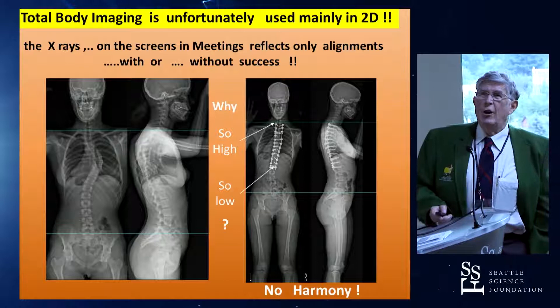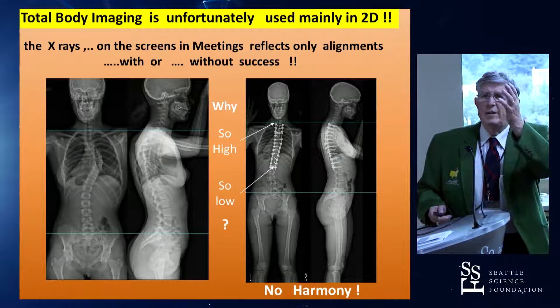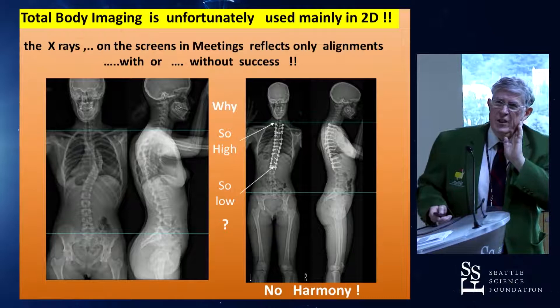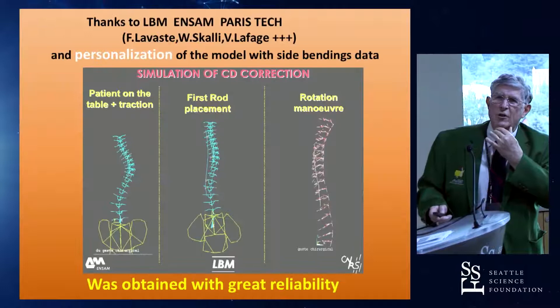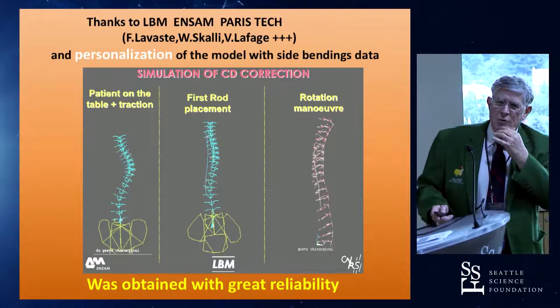Total body imaging is unfortunately used mainly in 2D. X-ray on the screen reflects only alignment — with or without success. For example, this curve: why is it fused so high, why so low? Geometric mechanics coming from total body imaging give very strong confirmation on surgical simulation. When we did this with Virginie Lafarge while she was preparing her engineering thesis at the ENSAM Institute, we simulated, for example, the CD correction, and we had great reliability.